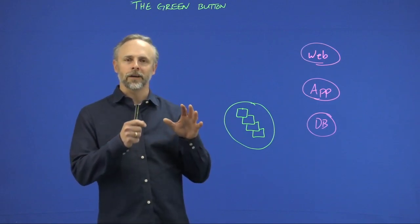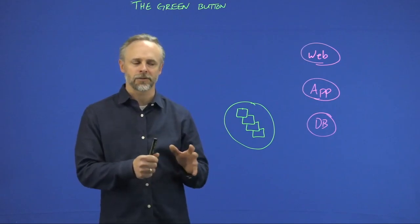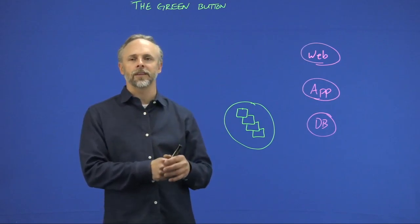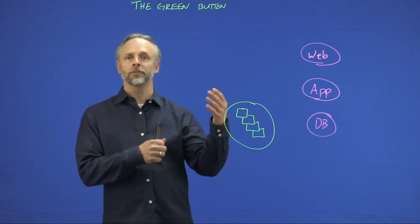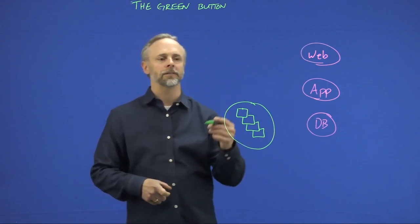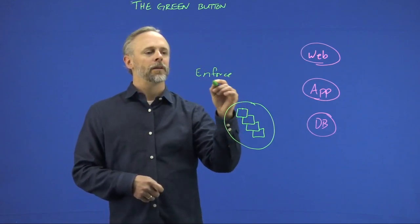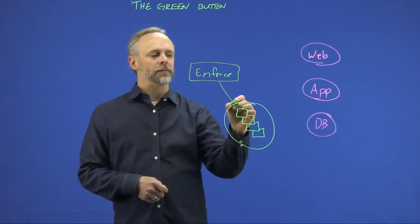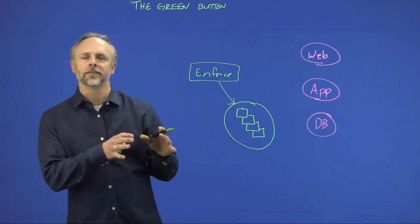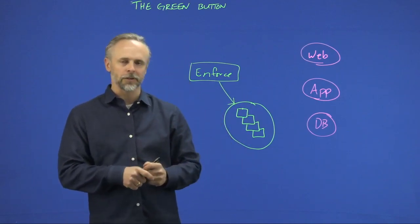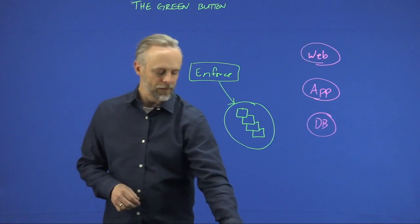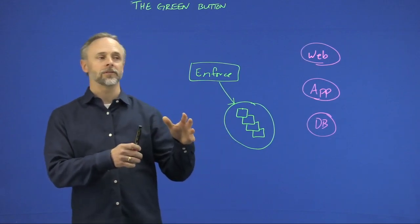Essentially, if you've had a chance to get into a Tetration system, you'll notice that if you go into the enforcement section, there's just a little green button that says enforce. Whenever you press that button, there are a number of things that actually happen in the background. So what I want to do is walk through really quickly what exactly happens when you do that.